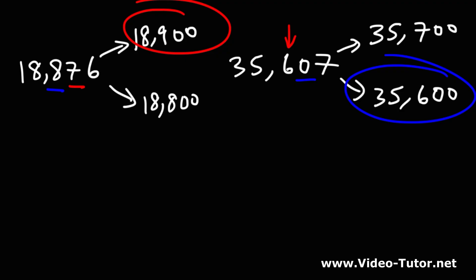So that's how you round a number to the nearest hundred. Just remember, the last two digits will be a zero, and you can either keep the hundreds digit the same or round it up one unit higher.